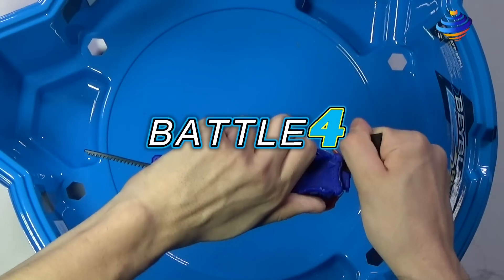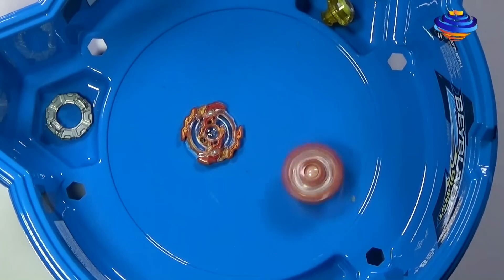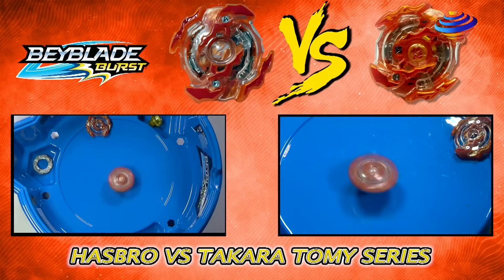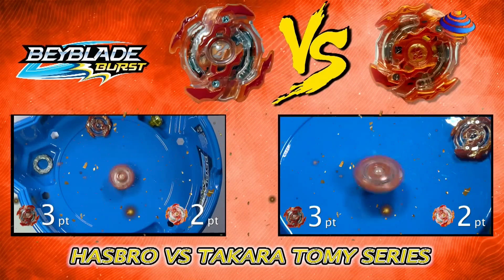Battle 4, 3-2-1, go shoot. Oh wow, already burst finish. Our winner is Rock Tavor R2 and the score should be 2-2. Oh, they're both tied. So let's see who wins in the final round.